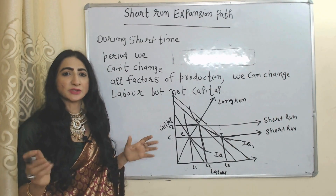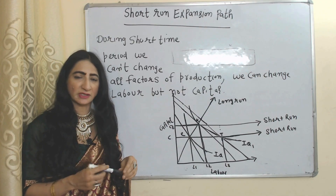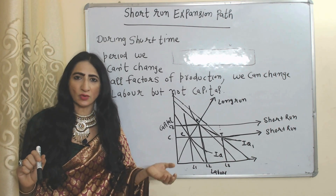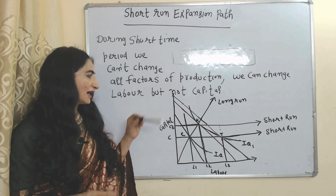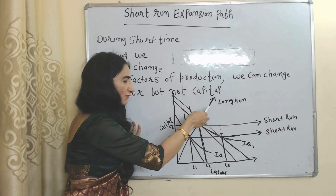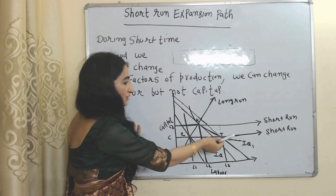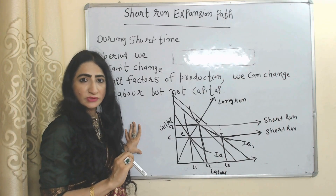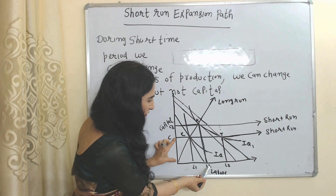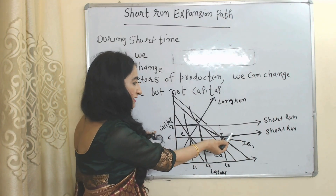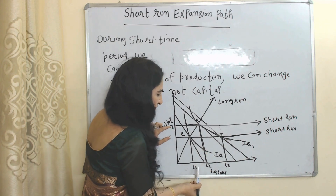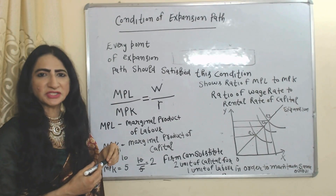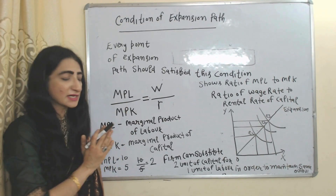Now we will see the short-run expansion path. During a short time period we cannot change all factors of production — we can only change labor, but we are not able to change capital. In this diagram, the diagonal line shows the long-run expansion path when we can change both labor and capital. The two horizontal lines show the short-run expansion path, where capital is constant and we are only increasing labor.